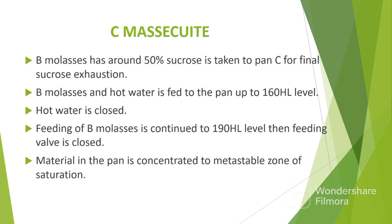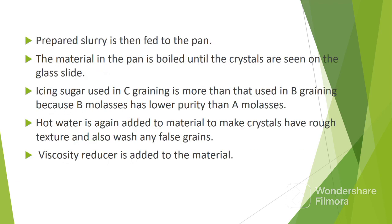Let's cover the preparation of C masecuite. B molasses from B masecuite has around 50% sucrose and is taken to pan C for final sucrose exhaustion. This molasses and hot water is fed to the pan up to 160 hectoliters level. Hot water is closed — remember, the function of hot water is to dissolve all the false grains in the molasses. Feeding of molasses is continued to around 190 hectoliters, then stopped. Material in the pan is concentrated to the metastable zone of saturation. Prepared slurry is then fed to the pan. The material is boiled until crystals are seen on the glass slide. The icing sugar used in C graining is more than that used in B graining because B molasses has lower purity than A molasses.